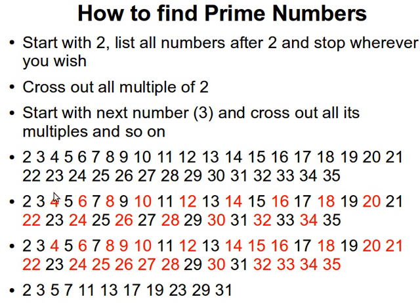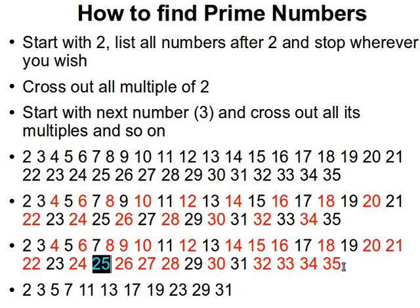Let's take an example. These are the numbers between two and thirty-five — zero and one are excluded. We cross out all the multiples of two: four, six, eight, ten, twelve, all the way up to thirty-four, shown in red. Then we go back and cross out the multiples of three: six is already crossed out, nine, twelve already crossed out, fifteen, eighteen already crossed out, twenty-one, twenty-four already crossed out, twenty-seven, thirty, thirty-three. Then for five, we cross out ten, fifteen, twenty, twenty-five, thirty, thirty-five.